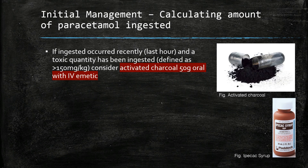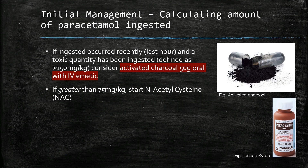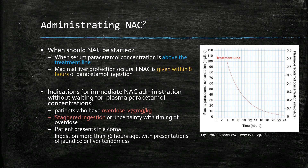If the overdose threshold of beyond 75 milligrams per kg has been met, then start NAC. We use a paracetamol overdose nomogram — if the plasma paracetamol concentration is above the treatment line, start NAC. NAC best protects the liver if given within eight hours of paracetamol ingestion. The indications for administering NAC immediately, without waiting for the four-hour paracetamol concentration, are: significant overdose above 75 milligrams per kg, patients with a staggered overdose, and patients presenting in a coma with ingestion more than 36 hours ago and signs of jaundice or liver tenderness.